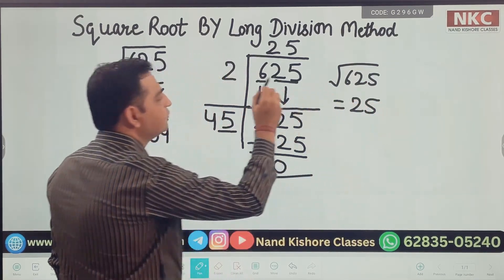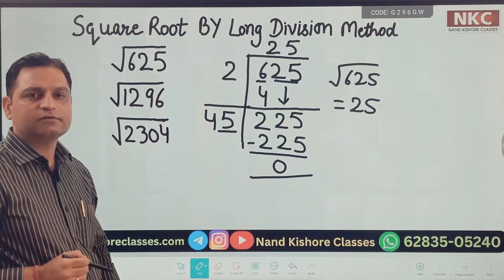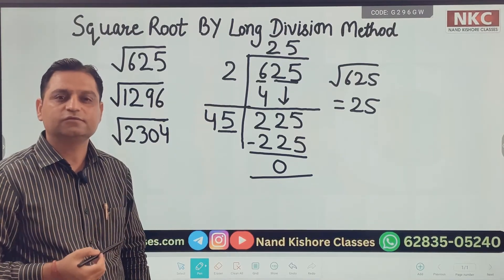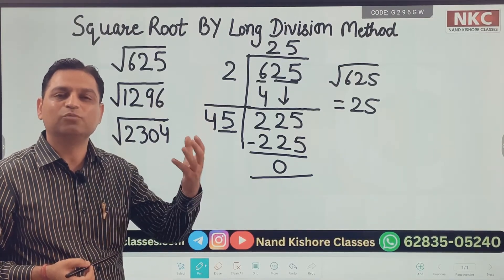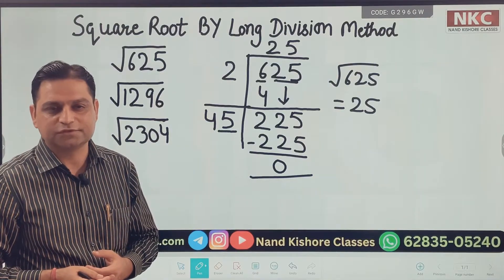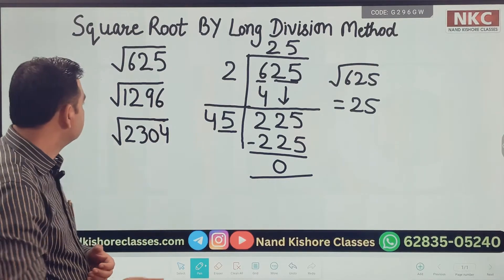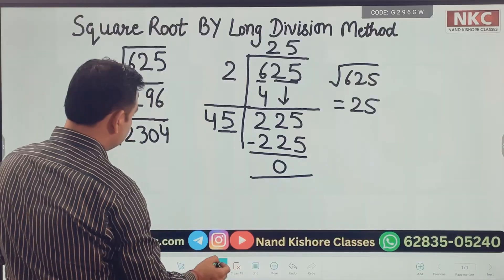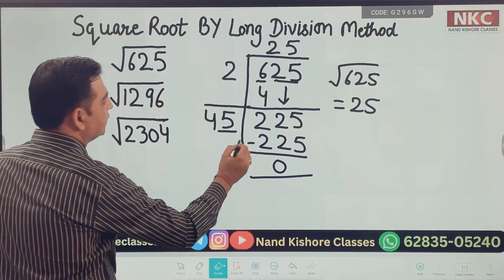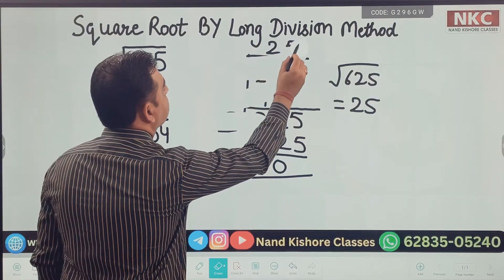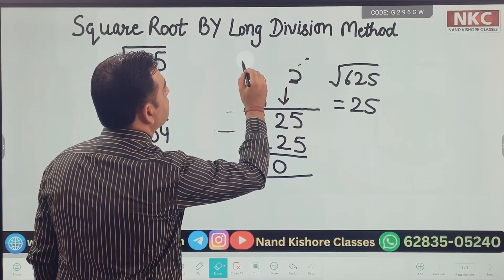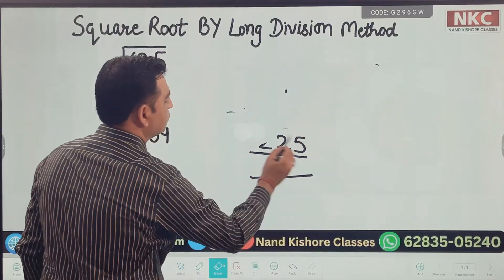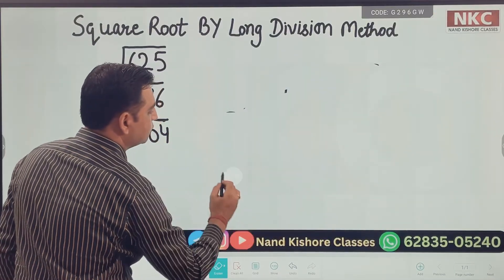I hope this method is clear. We are going to do more questions so that you have more clarity on how to perform the questions. The next one is 1296 — we are going to find its square root.